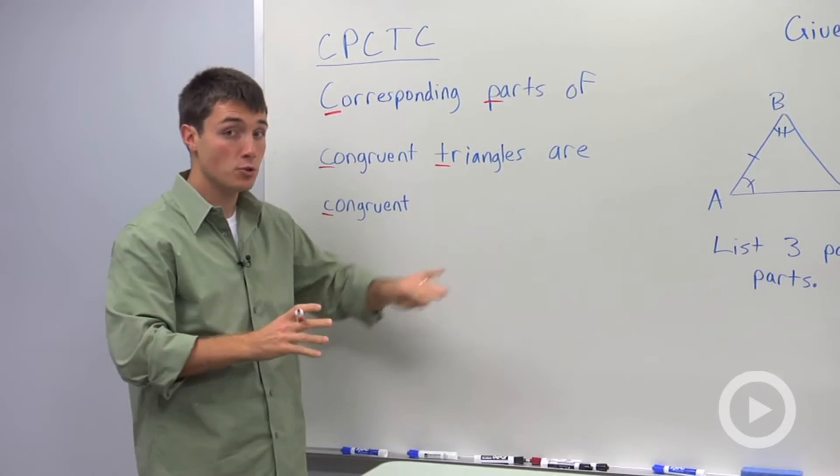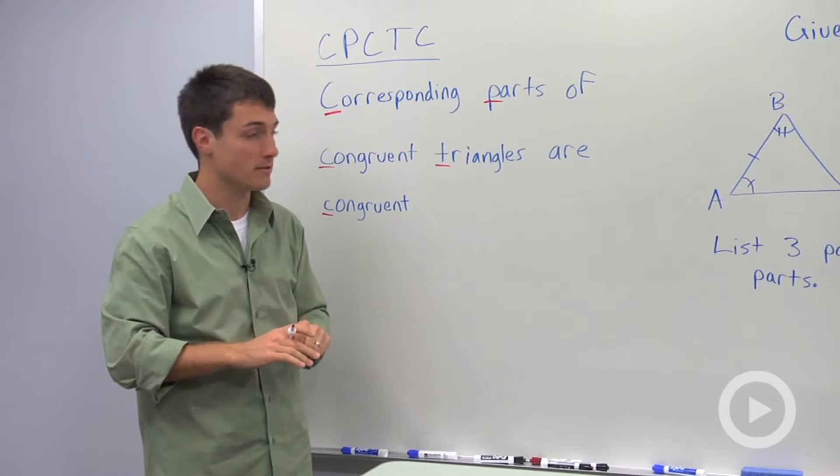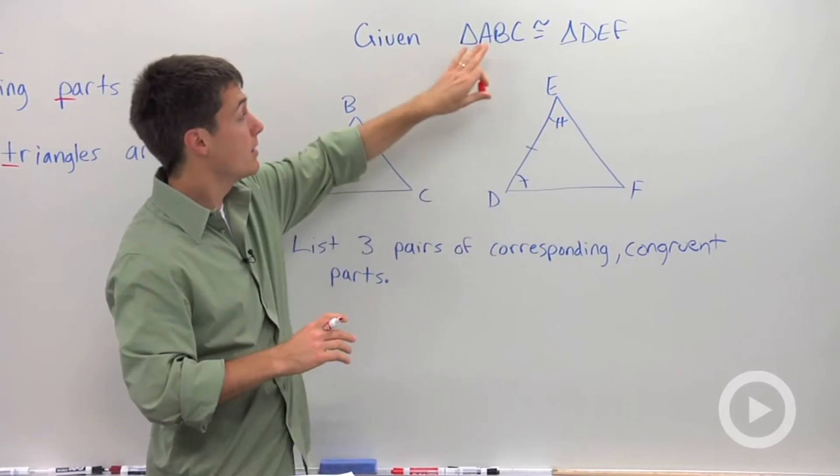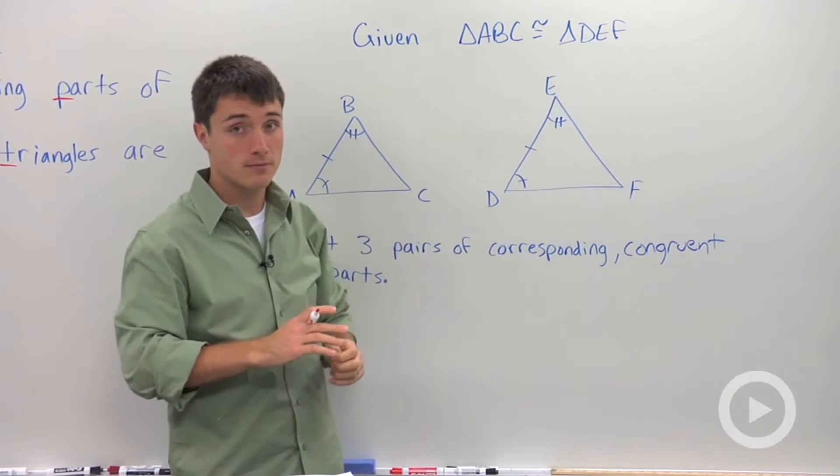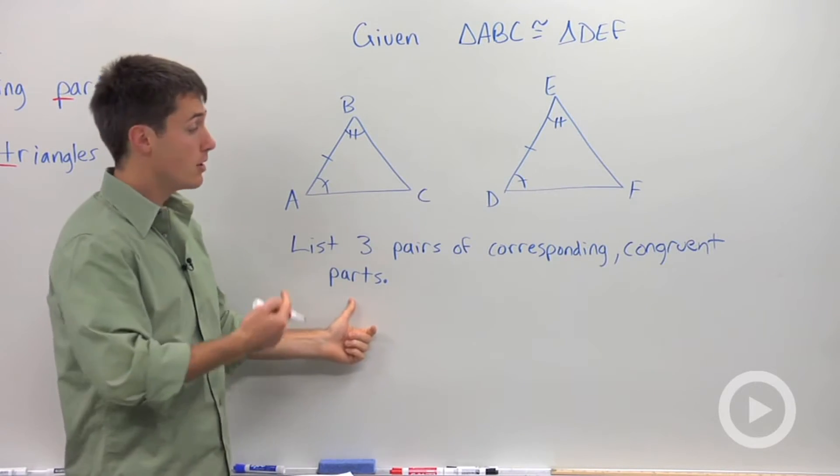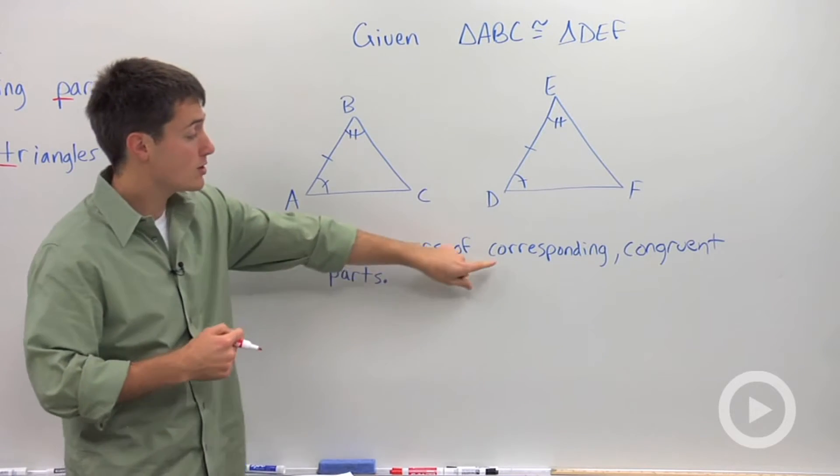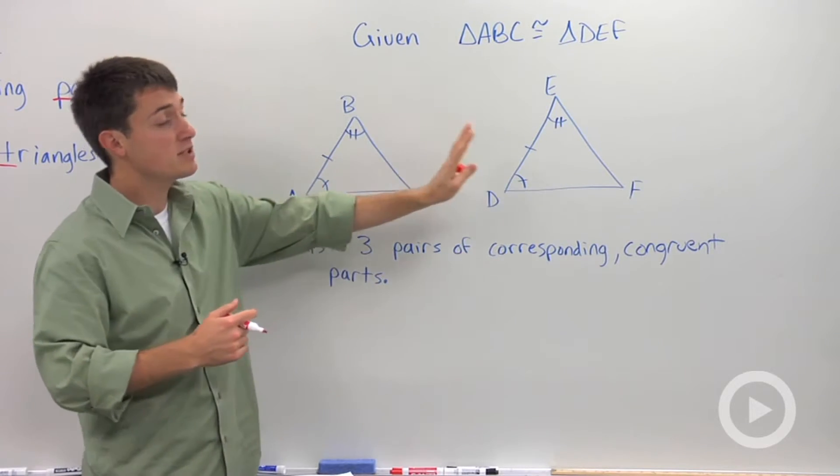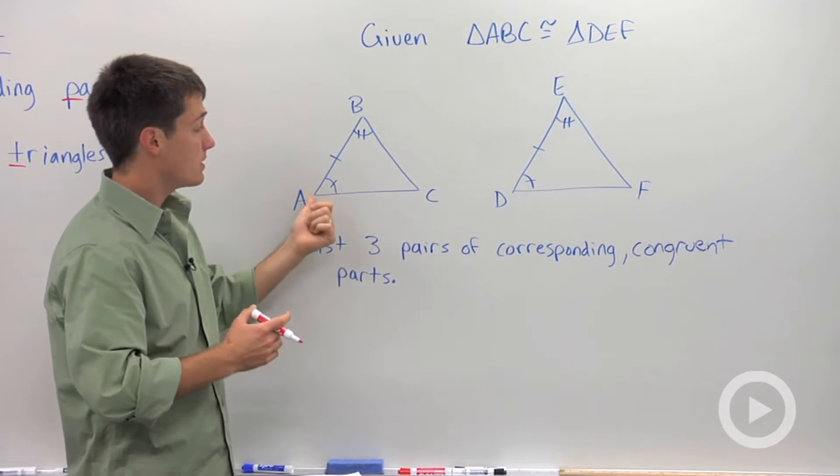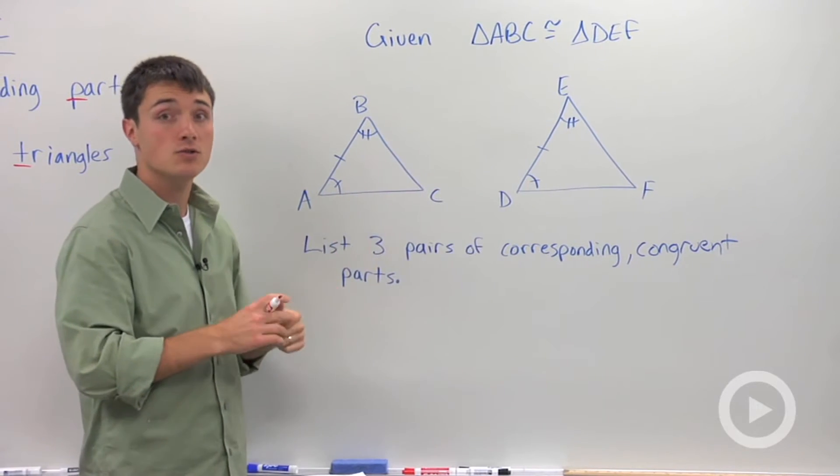Let's look at a quick example to apply CPCTC. So let's say we had two triangles where I said these two triangles are congruent. I'm going to ask you, what are three pairs of corresponding congruent parts? Corresponding means they're in the same position in the two triangles. Congruent because we accept the fact that these two must be congruent.